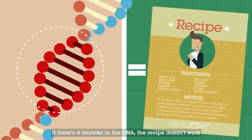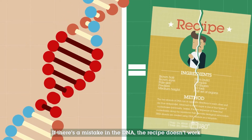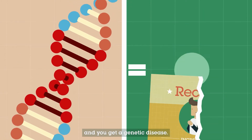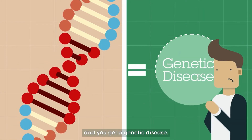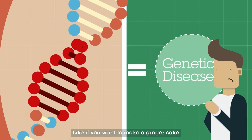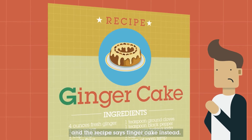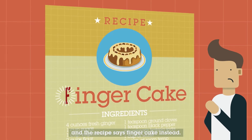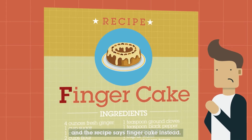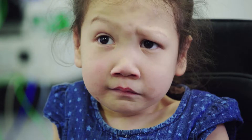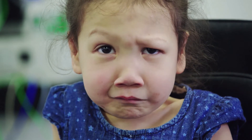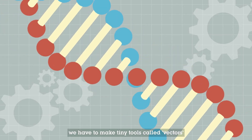If there's a mistake in the DNA, the recipe doesn't work and you get a genetic disease. Like if you want to make a ginger cake and the recipe says finger cake instead.